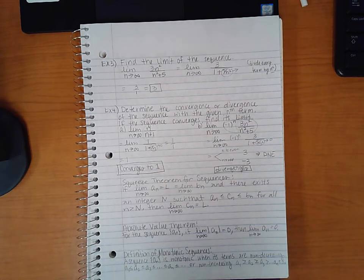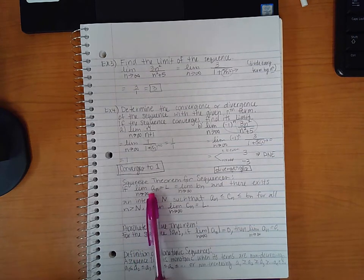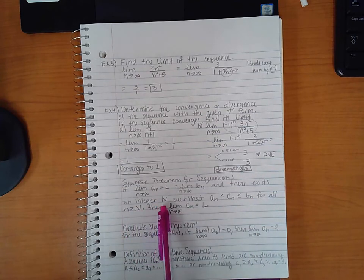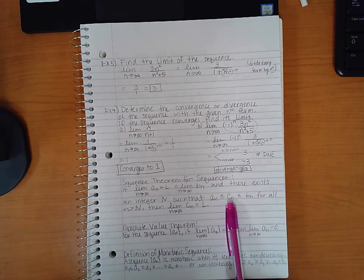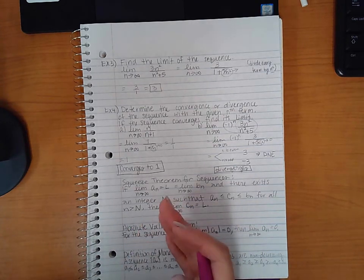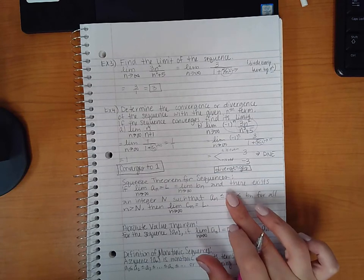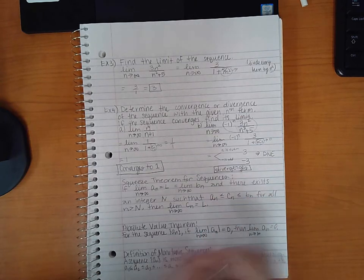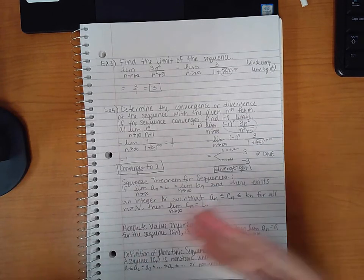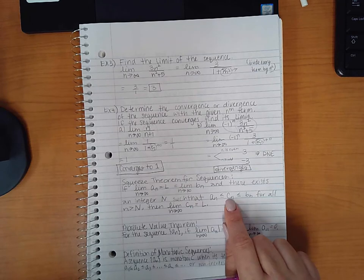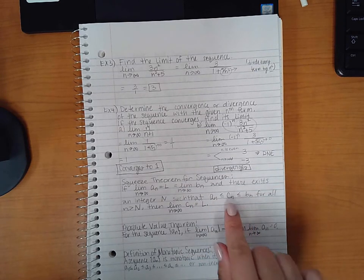So the next theorem is the squeeze theorem for sequences. It says if you have a sequence a_n and a sequence b_n and they both have the same limit, and there exists an integer N such that another sequence c_n is in between these two for all n greater than capital N. So basically if after so many terms if this sequence, all of its terms are in between these two guys' subsequent terms. So let's say this isn't true for maybe the first second third and fourth terms, but for the fifth term and on, this sequence's sixth term is in between these two guys' sixth terms.